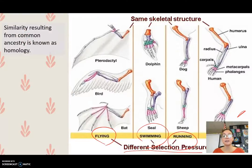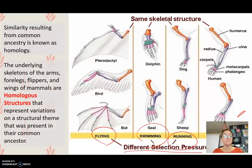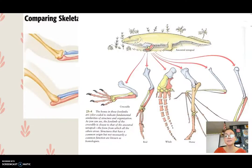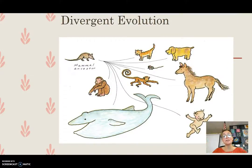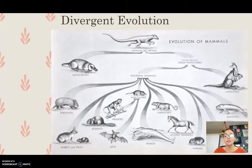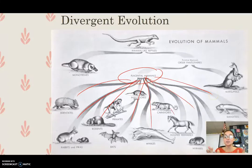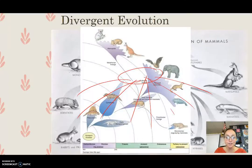The similarity resulting from common ancestry is called homology. The underlying skeletons of the arms, forelegs, flippers, or wings of mammals are called homologous structures — they represent variations on a structural theme present in their common ancestor. The common ancestor had these bones, and as mammals diverged into different habitats, different environmental pressures shaped those limbs to become different. This is called divergent evolution.